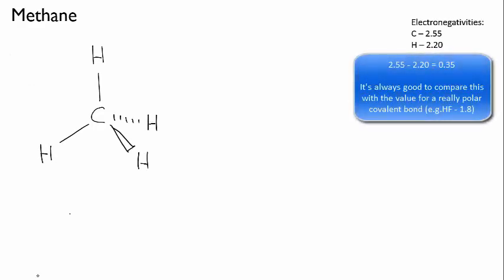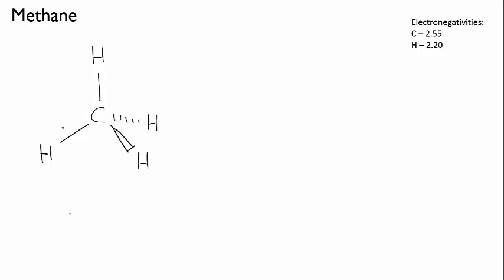Now let's have a look at methane. First we draw the Lewis structure. And then we look at the electronegativities. And you can see that the CH bond is only very slightly polar. In fact, people sometimes classify these types of bonds where the difference in electronegativities is very slight as non-polar. But I like to make the distinction between truly non-polar bonds and only slightly polar ones. So now we draw in the bond dipoles. Carbon is the more electronegative atom. So all four dipoles have the same magnitude and they're all pointing inward along the four bonds towards the central carbon.